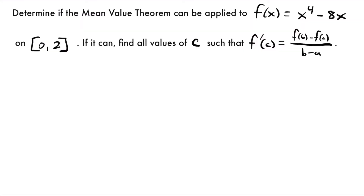Here we have another example: we want to know if the mean value theorem can be applied to f(x) = x⁴ − 8x on the interval from 0 to 2, and if so, find all values of c such that the derivative at c equals the slope between our endpoints. The first thing is to check continuity and differentiability. Spoiler alert — it is going to be differentiable and continuous because it is a polynomial, with no undefined values or breaks. But let's go through the process anyway.